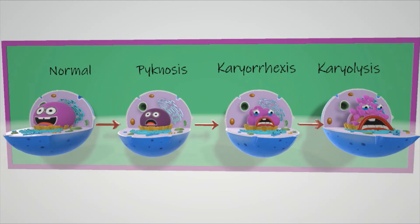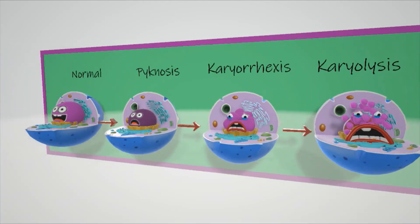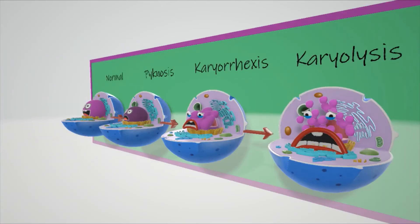And then we come to karyolysis. Karyolysis is when those pieces of the nucleus that ruptured become broken down further to their basic building blocks, as we see over here. The nucleus has been broken down even further. 'Karyo' means kernel, and 'lysis' means breaking apart, as the ruptured pieces from karyorexis were broken down even further.